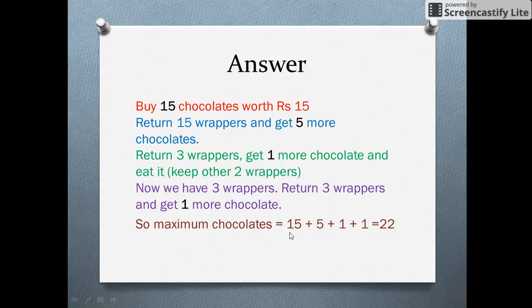So, in this way, you can have 15 chocolates for rupees 15, then 5 chocolates in return of these 15 wrappers. Then, 1 more chocolate in return of the 3 wrappers from these 5 chocolates.